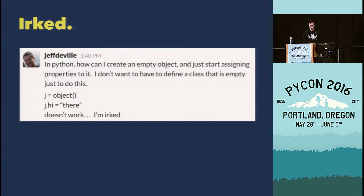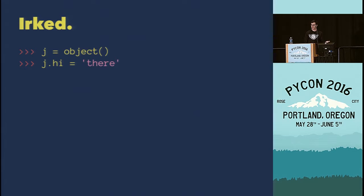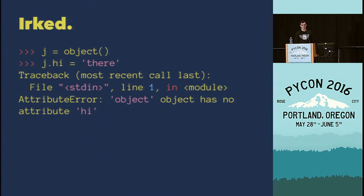Jeff is writing Python and he wants to create an empty object and just start assigning properties to it, because he's a good developer and he's lazy. But he doesn't want to have to define a class. Jeff has a pretty good question. When I saw this I asked myself, why can't you do that? So I fired up my interpreter and typed j equals object open close paren. I know that object is a built-in name in Python and it's instantiable, so this works fine. The next thing I do is type j.high equals the string there. But this does not work — we get an AttributeError: object object has no attribute high. Why does this happen? Of course it doesn't have that attribute — we are trying to set it. But why doesn't it work?